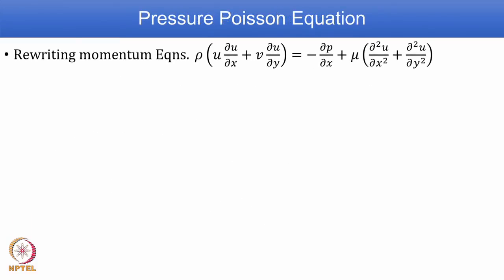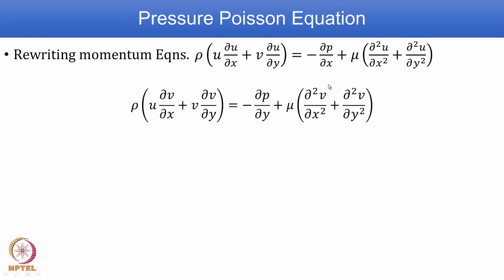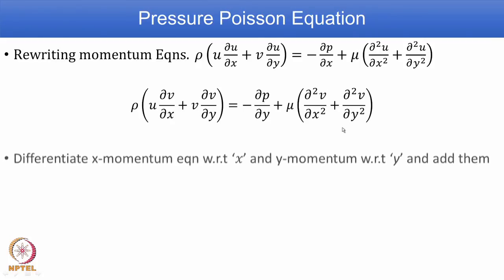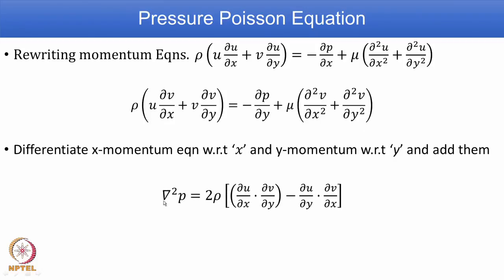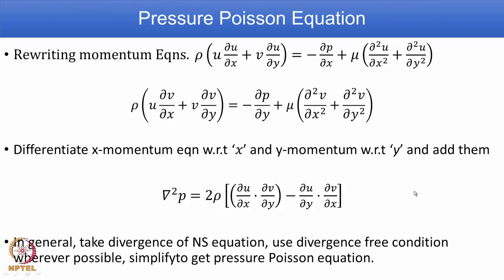To derive the pressure Poisson equation for two dimensions: write the X-momentum and Y-momentum equations, differentiate the X-momentum equation with respect to x and the Y-momentum equation with respect to y, then add both together. This results in the pressure Poisson term on the left side and the corresponding source term on the right side. For 3D in general, you take the divergence of the Navier-Stokes equation and apply the divergence-free condition wherever possible to simplify and get the pressure Poisson equation.